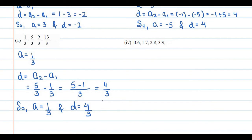Now come to the last part that is fourth part. Now go to the fourth part. So you can see, again, the first term is this one. 0.6. The common difference d equals a₂ minus a₁ equals 1.7 minus 0.6 equals 1.1. So this is the value of common difference. Final answer: first term a is equal to 0.6, and common difference d is equal to 1.1.